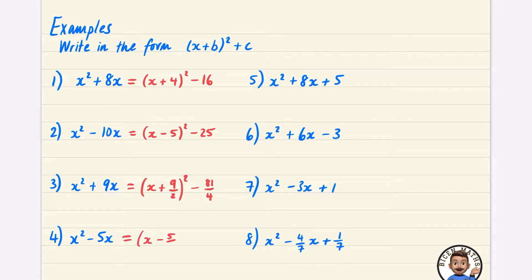For this one I'm going to half it, so it becomes minus 5 over 2 squared. Remember, you're subtracting that thing squared, so it's subtracting 25 over 4. You can just square the 5 and the 2 separately. It's always going to be subtracting something positive, because you're squaring something negative, and a negative times a negative is a positive.